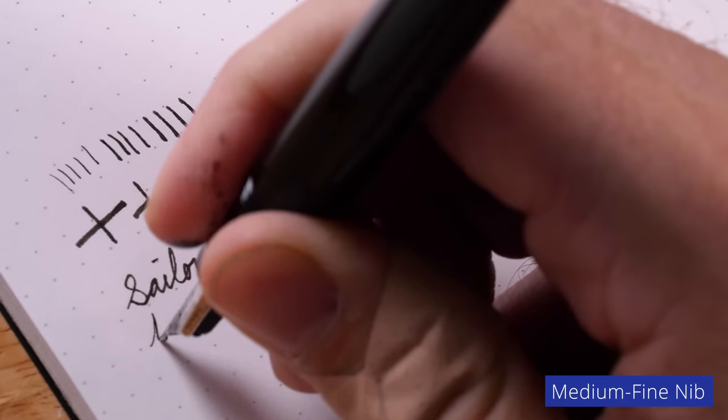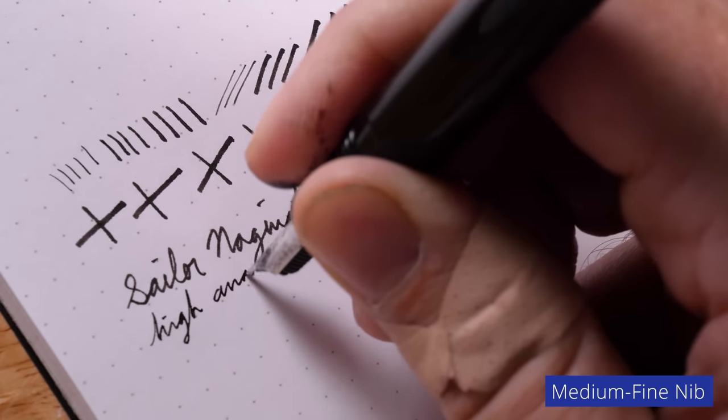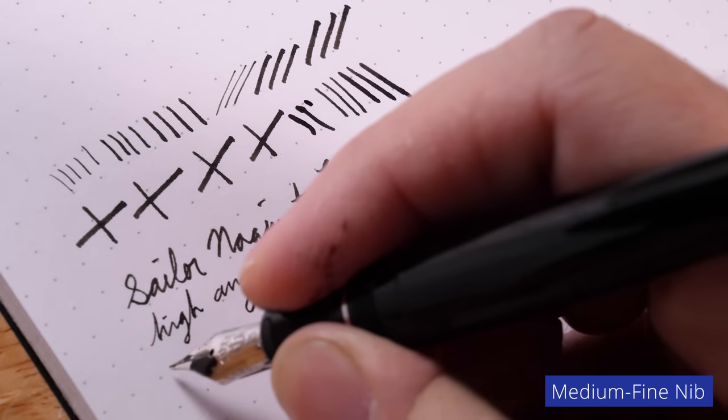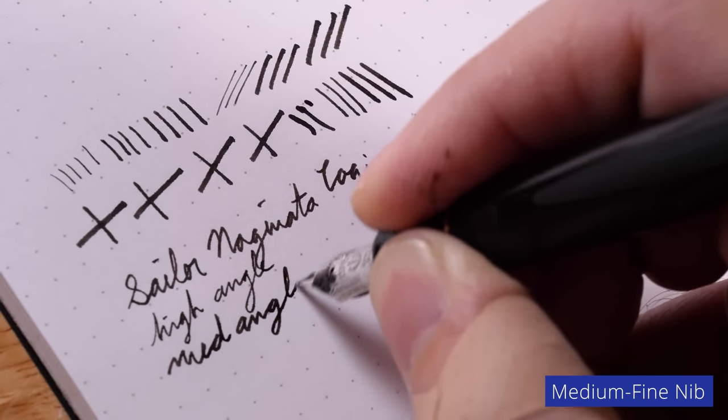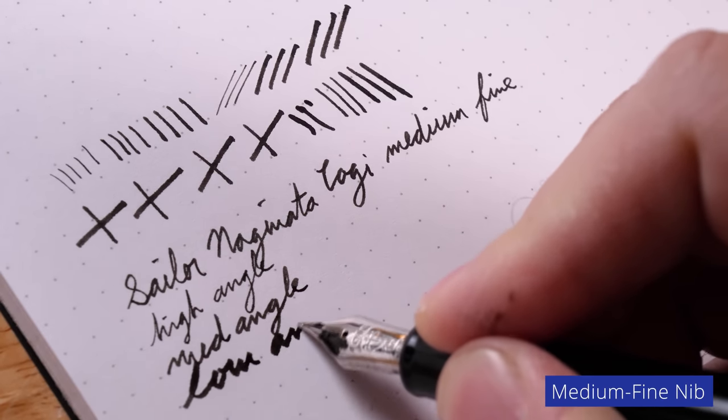And then I'll just do a few scribbles. So I got my high and when you write really high angle, you can probably hear it grabbing onto the paper a little bit, high angle, medium angle, low angle. Just look at that difference.